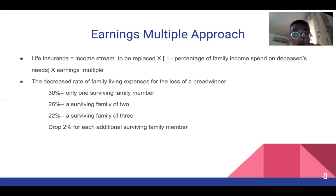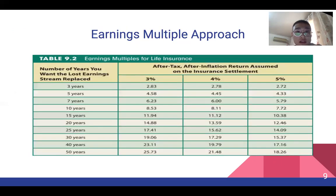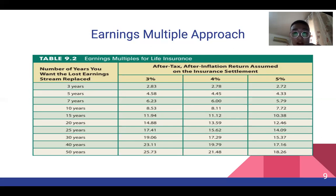The earnings multiple can be found on the earnings multiple table. The first column is the number of years you want the lost earnings stream replaced. The three percent, four percent, and five percent columns are rates of return on the insurance settlement after taxes and inflation. By using those two numbers you can match your earnings multiple. The longer you need to replace the income stream, the greater the multiple; the higher the return you believe you can earn on the settlement, the lower the multiple.